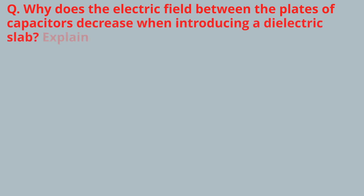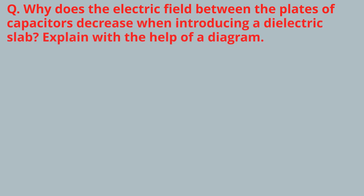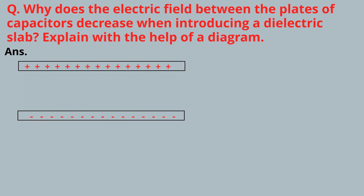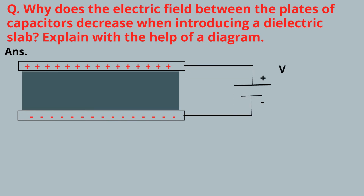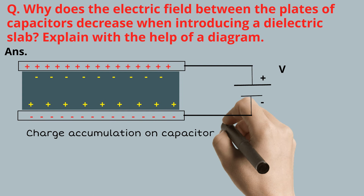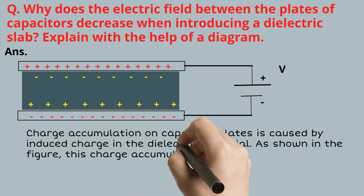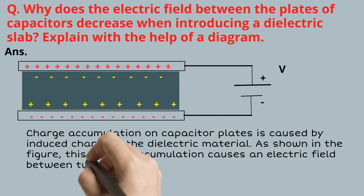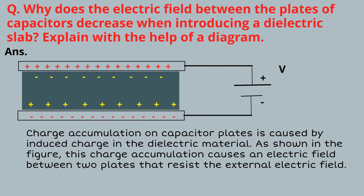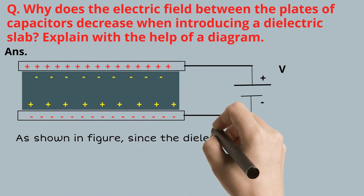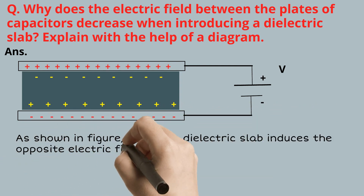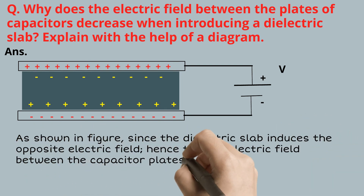FAQ: Why does the electric field between the plates of a capacitor decrease when introducing a dielectric? When a dielectric material is placed between parallel plates of a capacitor under an external electric field, the atoms of the dielectric material will polarize. Charge accumulation on capacitor plates is caused by the induced charge in the dielectric material. As shown in the figure, this charge accumulation causes an electric field between the two plates that resists the external electric field — the dielectric plates induce an opposite electric field, hence the net electric field between the capacitor plates is decreased.